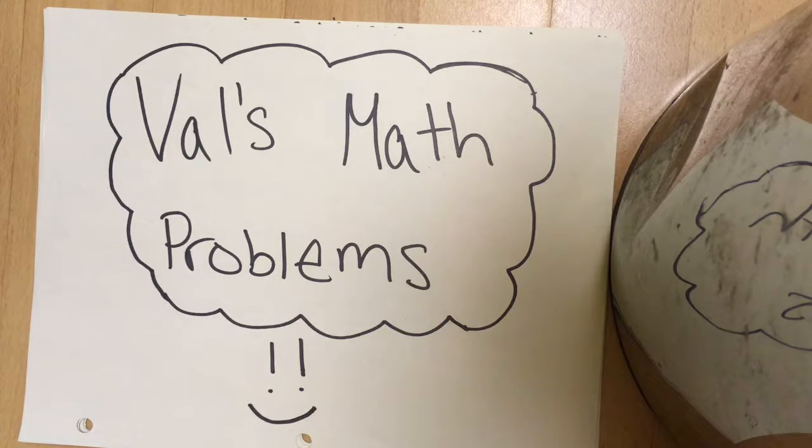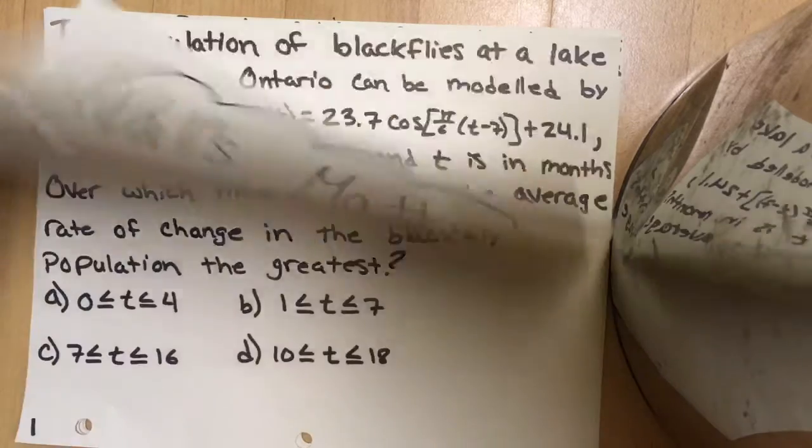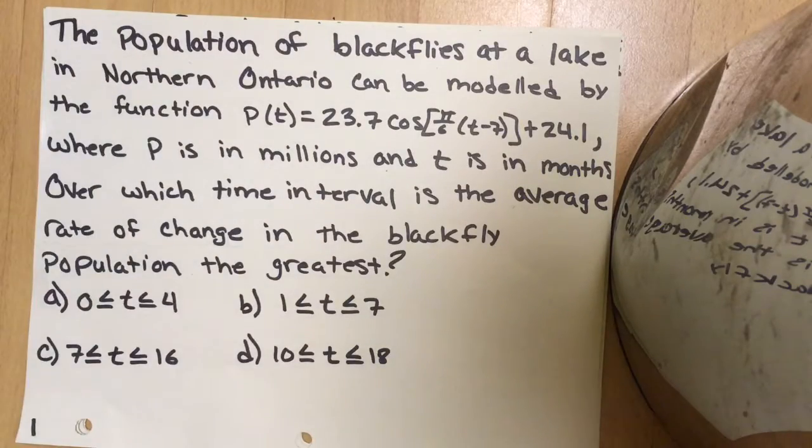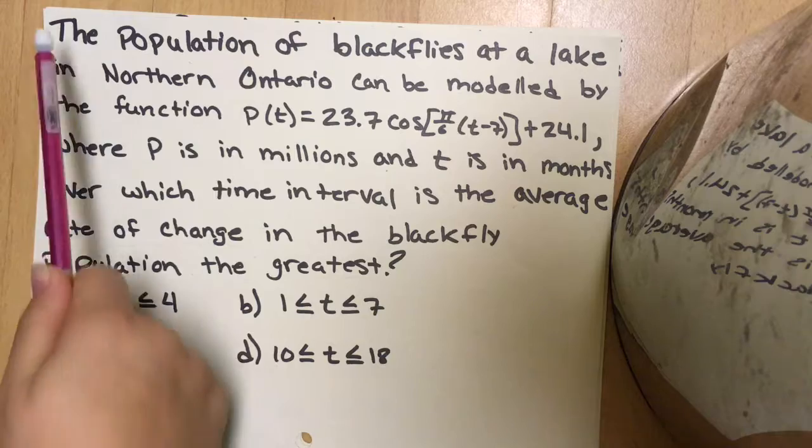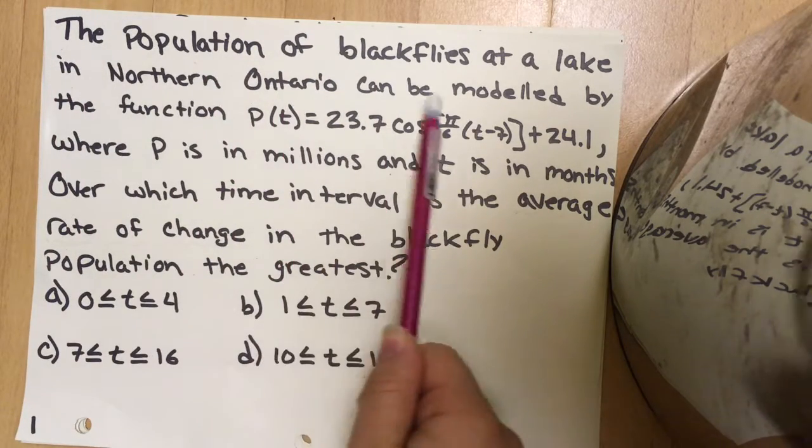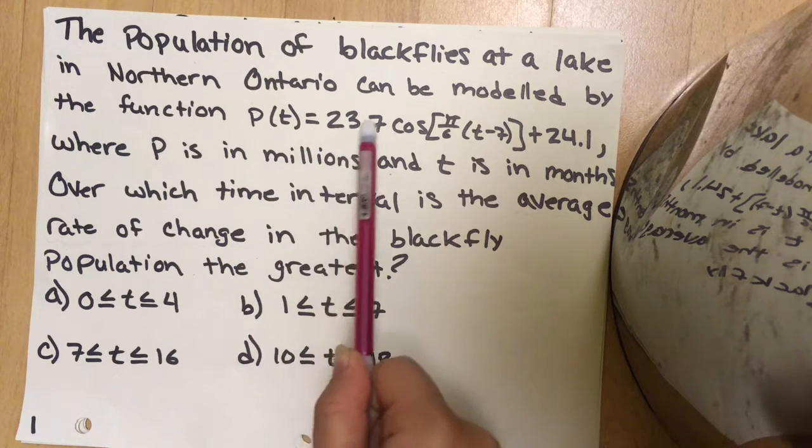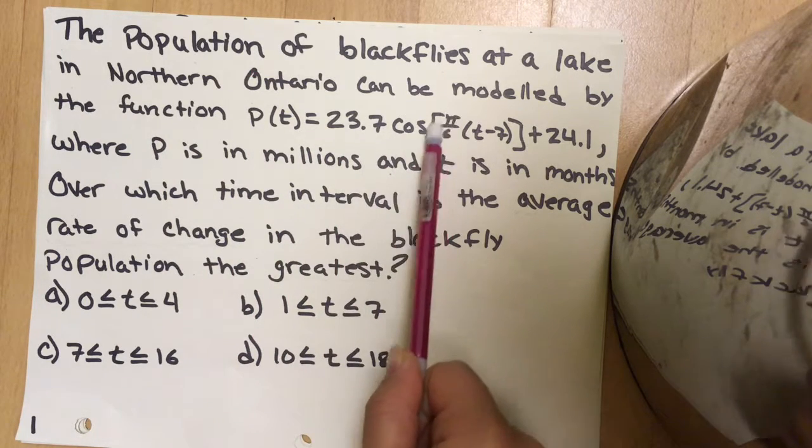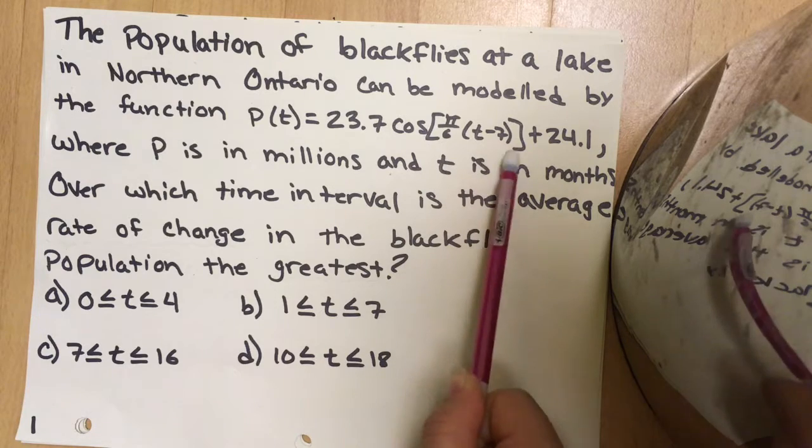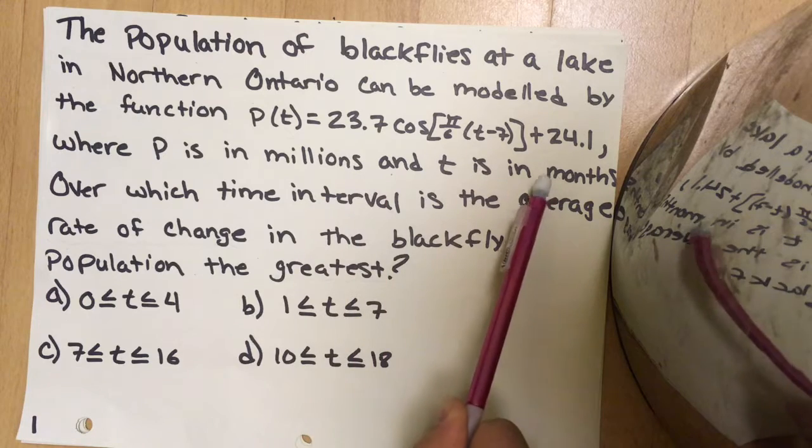Hello everyone and welcome back to Val's math problems. Today's problem is an average rate of change problem involving a sinusoidal graph. Let's read it together. The population of blackflies at a lake in Northern Ontario can be modeled by the function P(t) = 23.7 cos(π/6(t-7)) + 24.1, where P is in millions and t is in months.